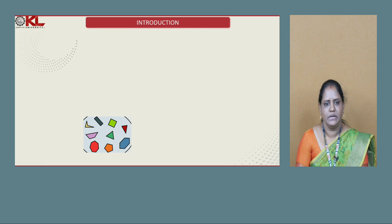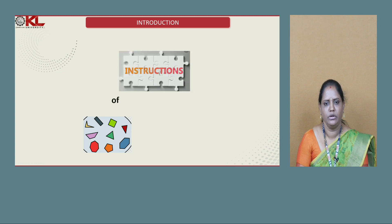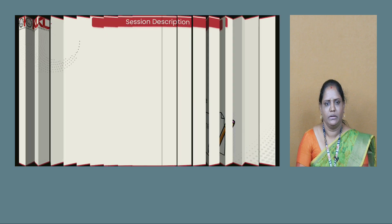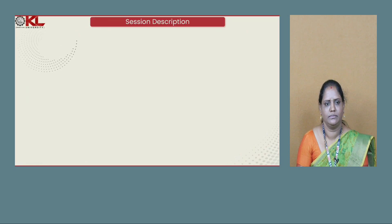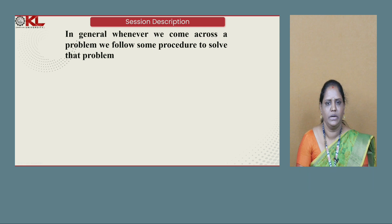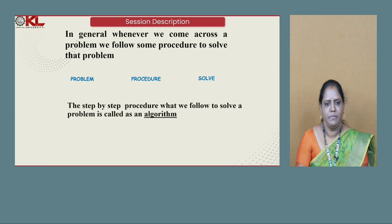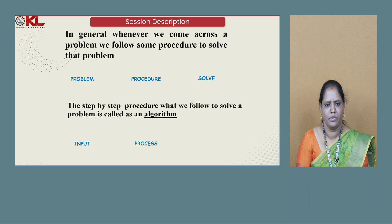Introduction: A set of instructions we follow in order to solve a problem is called an algorithm. Whenever we come across a problem, we follow some procedure to solve it. The step-by-step procedure we follow to solve a problem is called an algorithm. Each algorithm basically has three steps: giving some input, doing some process, and then getting some output.